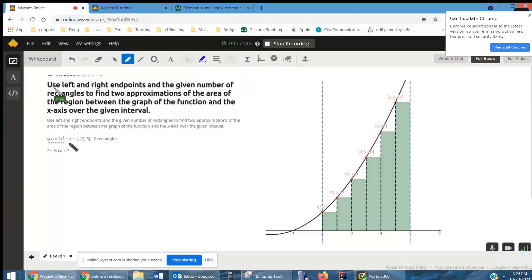So we have this function, g of x equals, well, that's this parabola right here. We're told to find the area under the curve from 2 to 5, so here's 2, here's the right-hand endpoint at 5, divide it into 6 rectangles and use that to approximate the area under the curve.